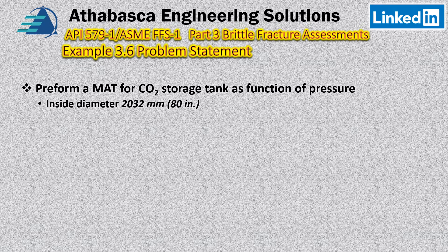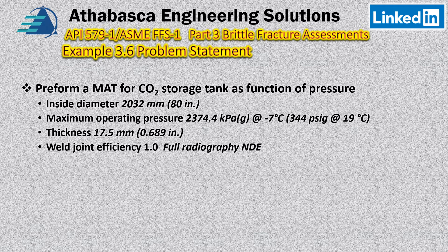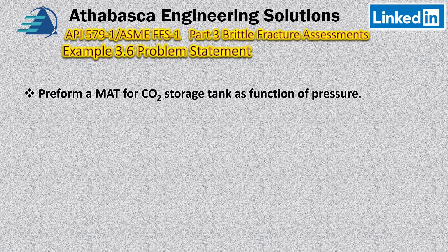The inside diameter is 2032 millimeters (80 inches) and the maximum operating pressure is 2374.4 kilopascals at minus 7°C, which converts to 344 psig at 19°F. The thickness of the unit is 17.5 millimeters, which translates into 0.689 inches. The weld joint efficiency is 1.0 because it is a full radiography NDE.